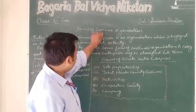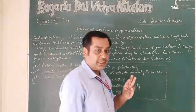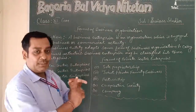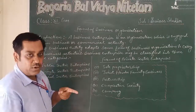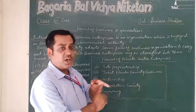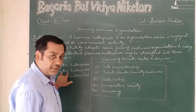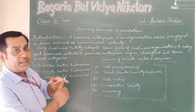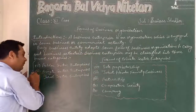In this class, we talked about the forms of business organization in three parts: public sector enterprises, private sector enterprises, and joint sector enterprises. Public sector enterprises are owned, managed, and controlled by central or state government. Private sector enterprises are owned, managed, and controlled by individuals. Joint sector enterprises are owned, managed, and controlled jointly by the private and public sectors.